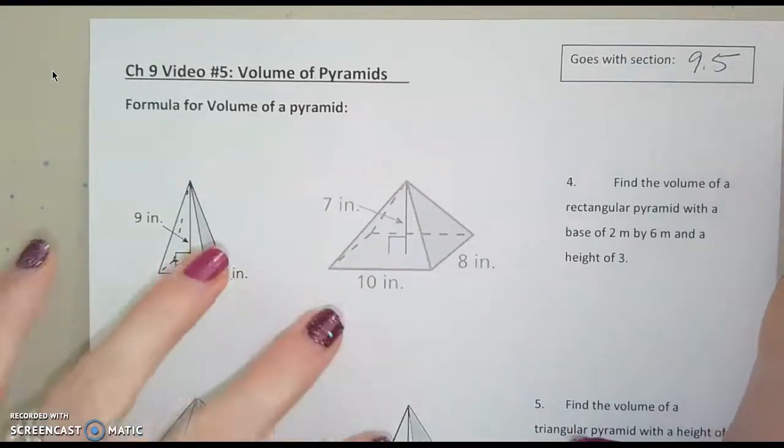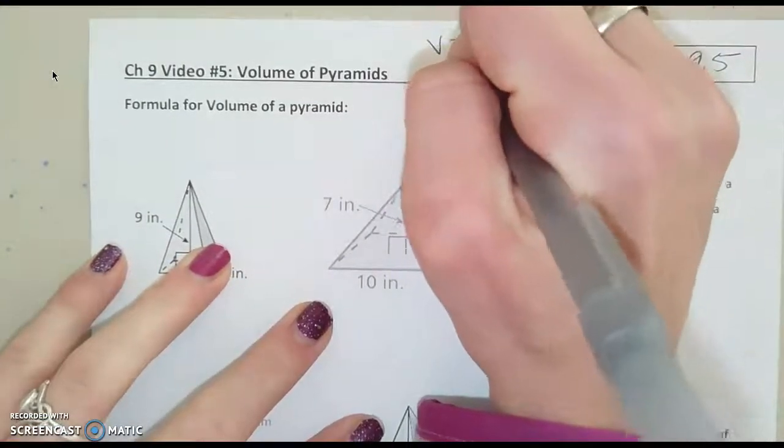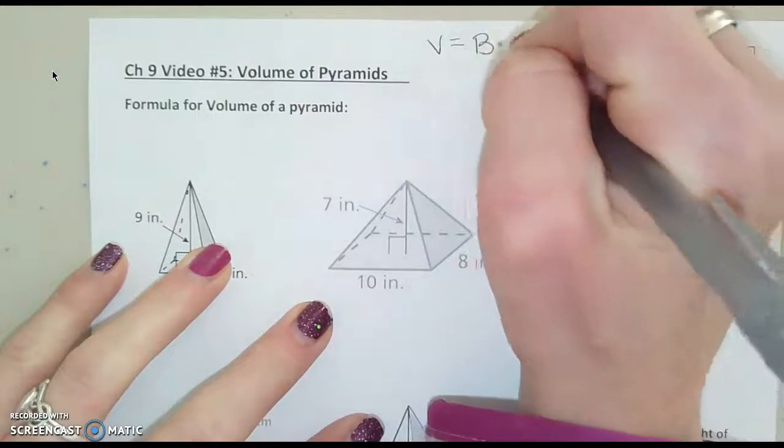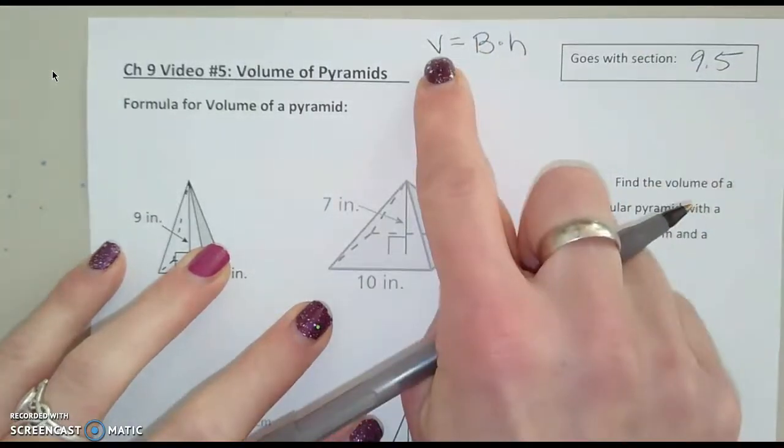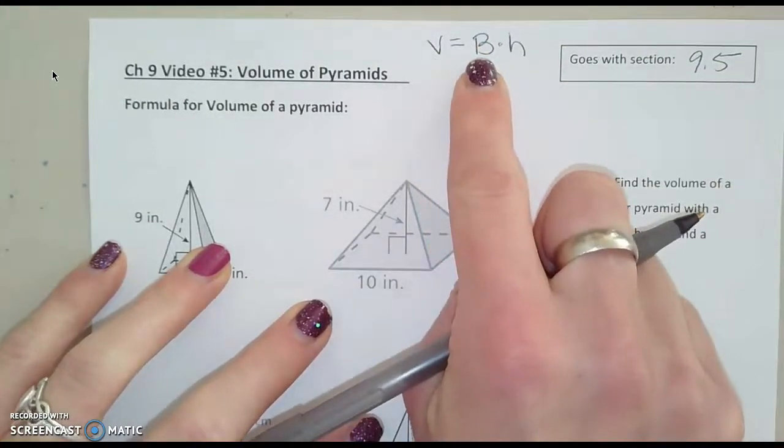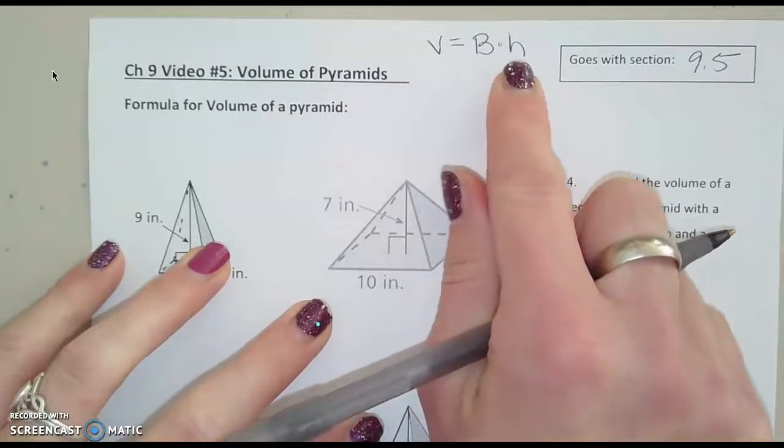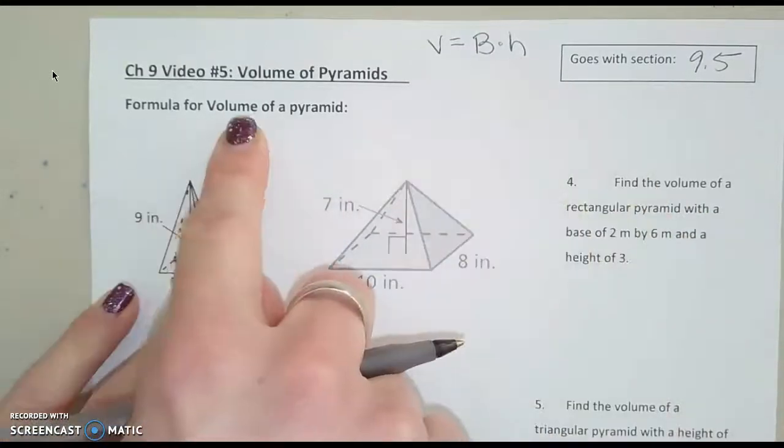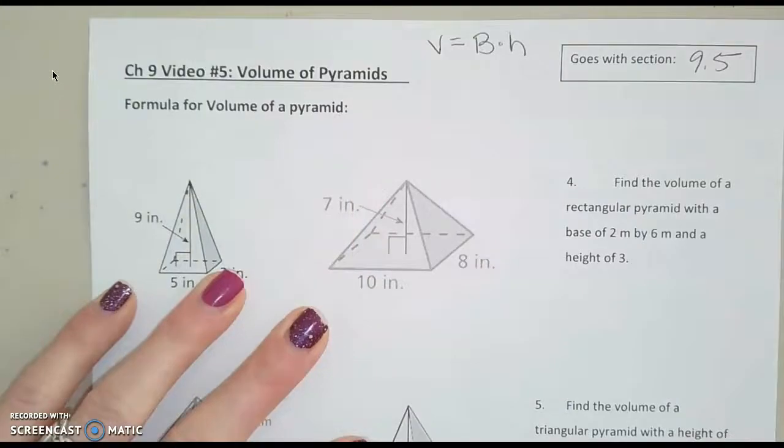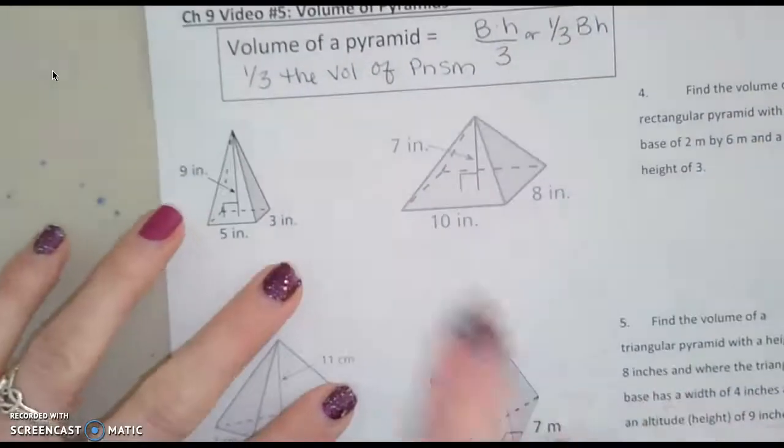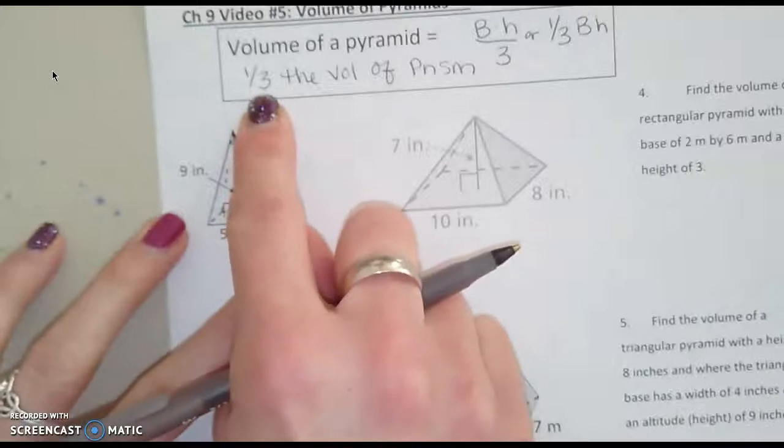So if you think back, I want to remind us that volume for prisms was capital B times H. That's our formula for the volume of a prism, right? Area of the base times the height of the prism. Well, the formula for the volume of a pyramid is very similar. We're going to start by finding it the same way, except it's only one-third as big.